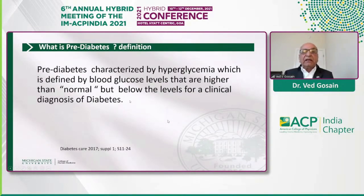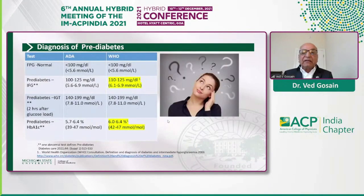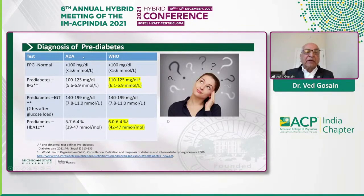Prediabetes is characterized by hyperglycemia defined by blood glucose levels that are higher than normal but below the levels for a clinical diagnosis of diabetes. There is some disagreement on what makes the diagnosis of prediabetes. For impaired fasting glucose, the American Diabetes Association criteria is 100 to 125 mg/dL, whereas the WHO and IDF use 110 to 125.